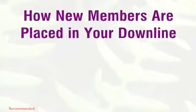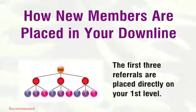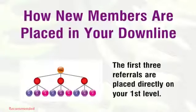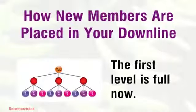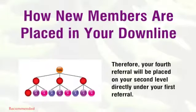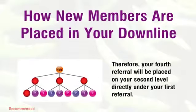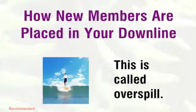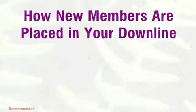How new members are placed in your downline: the first 3 referrals are placed directly on your first level. The first level is full now, therefore your 4th referral will be placed on your 2nd level, directly under your first referral. This is called overspill.